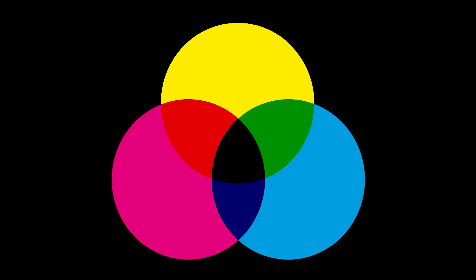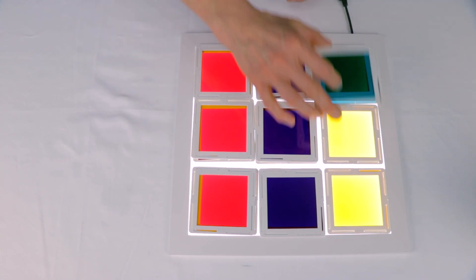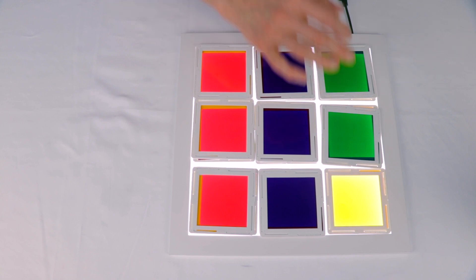Now for the last two yellow filters, we already know that cyan allows green and blue to pass through. But yellow filters absorb blue and allow red and green to pass through. So when we place the cyan on top, the color becomes green. And for the final yellow, we'll just leave it as it is. Let's try another one.